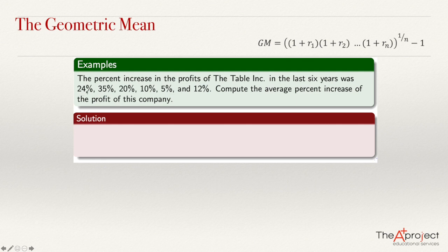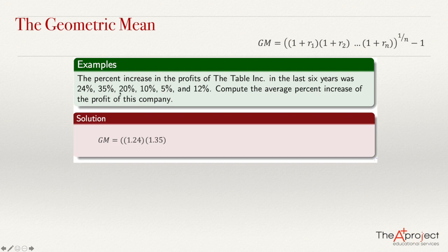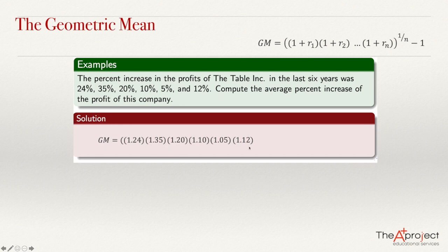In this case, to 24% — which is actually 0.24 — I add 1 to get 1.24. The geometric mean will be the product of: 1.24 times 1.35 (from 0.35 plus 1) times 1.20 (from 0.20 plus 1) times 1.10 (from 0.10 plus 1) times 1.05 (from 0.05 plus 1) times 1.12 (from 0.12 plus 1). I raise this to the power of 1 over 6 because we have 6 data points, so it will be to the power of 1 over 6, minus 1.